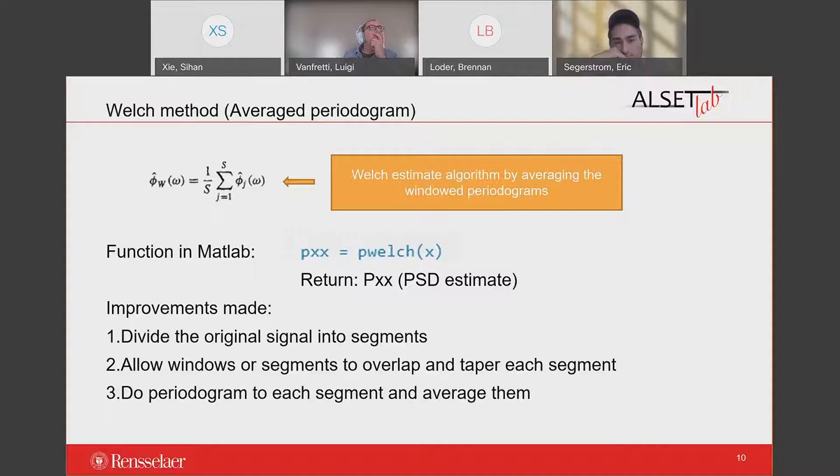Welch method uses overlapping windows to reduce the noise, and several aspects have been improved. First, it divides the original signal into pieces of segments. This is because we want to reduce the large fluctuations of periodogram. Second, we will overlap these segments and apply a taper function to each of them. The last step is to do periodogram to each section and average all the segments.